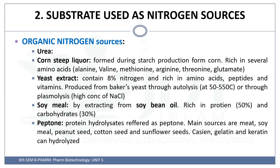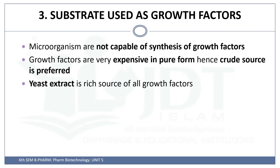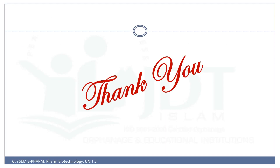Soya bean meal is another nitrogen source factor. Then peptone, from protein hydrolysis, is another nitrogen source. Growth factors are components that micro-organisms are not capable of synthesizing themselves. Growth factors are very expensive in pure form; hence a crude source is usually preferred. Yeast extract is an important example of a growth factor. That's all about the substrates and culture media used in the fermentation process.